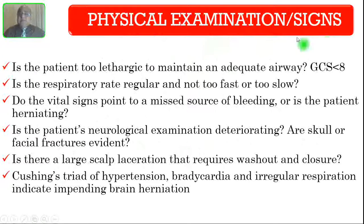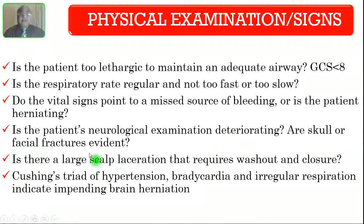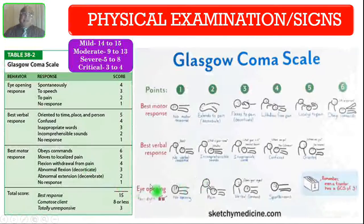In physical examination, look for all these things: if the patient is too lethargic to maintain an adequate airway, the GCS is below 8 or the patient is in coma. Is the respiratory rate regular and not too fast or too slow? Do the vital signs point to a missed source of bleeding, or is the patient herniating? Is the neurological examination deteriorating, or are skull or facial fractures evident? Is there a large scalp laceration requiring washout and closure? Cushing's triad of hypertension, bradycardia, and irregular respiration indicates impending brain herniation.